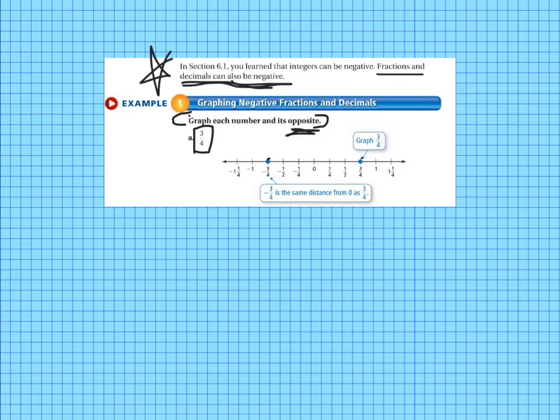And this is kind of an important note here, negative 3 fourths is the same distance from 0 as 3 fourths.